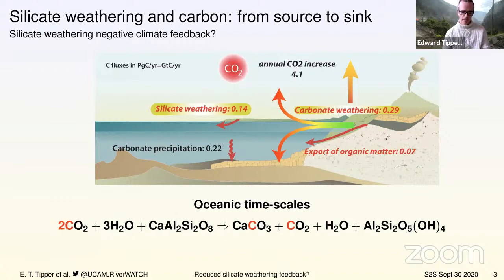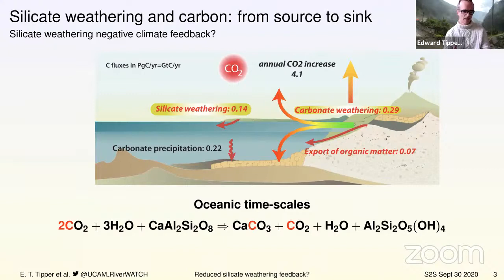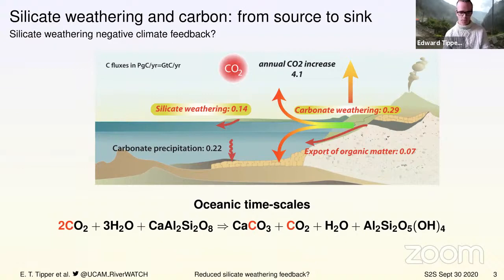We worry about this from a global climate perspective because the simplest possible reaction — taking a calcium-bearing feldspar and carbonic acid — is taking carbon dioxide out of the atmosphere. You dissolve the calcium-bearing silicate and transfer CO2 out of the atmosphere, delivering it to the bicarbonate reservoir in river water or the oceans on a short timescale, and sequestering it into calcium carbonates as marine limestones on a longer timescale.